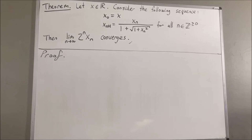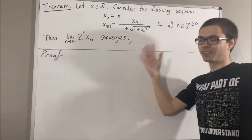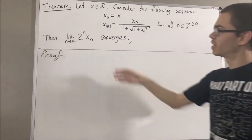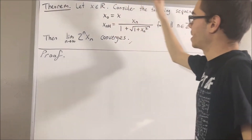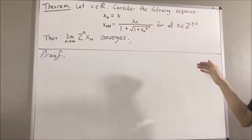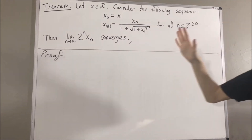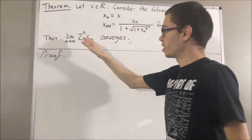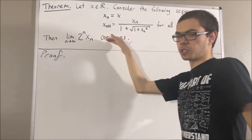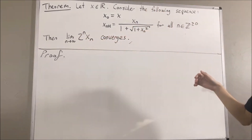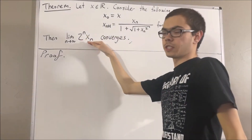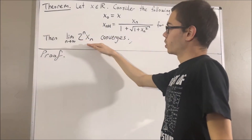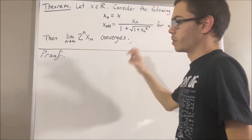Hello! In this video, we are going to prove the following theorem. Let x be a real number, and consider the following sequence. Then, the sequence 2 to the n xn converges. To prove that this sequence converges, we are going to break this up into three cases.